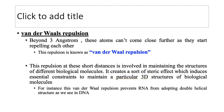What do you mean by Van der Waals repulsion? If we bring these induced molecules closer than 3 angstroms, they will start repelling each other, and this is known as Van der Waals repulsion. That repulsion is very important — repulsion at these short distances is involved in maintaining the structure of different biological molecules. It creates a sort of steric effect, which induces essential constraints to maintain a particular three-dimensional structure of biological molecules. For instance, Van der Waals repulsion prevents RNA from adopting a double helical structure, as we see in DNA.